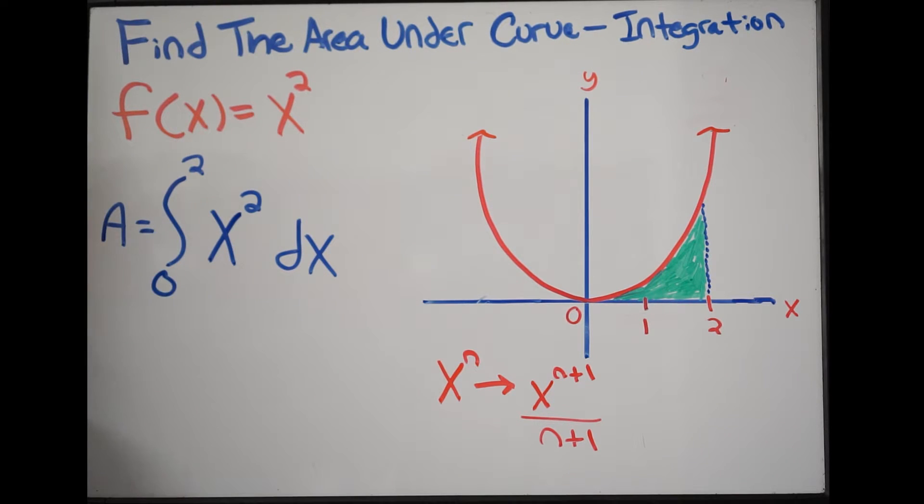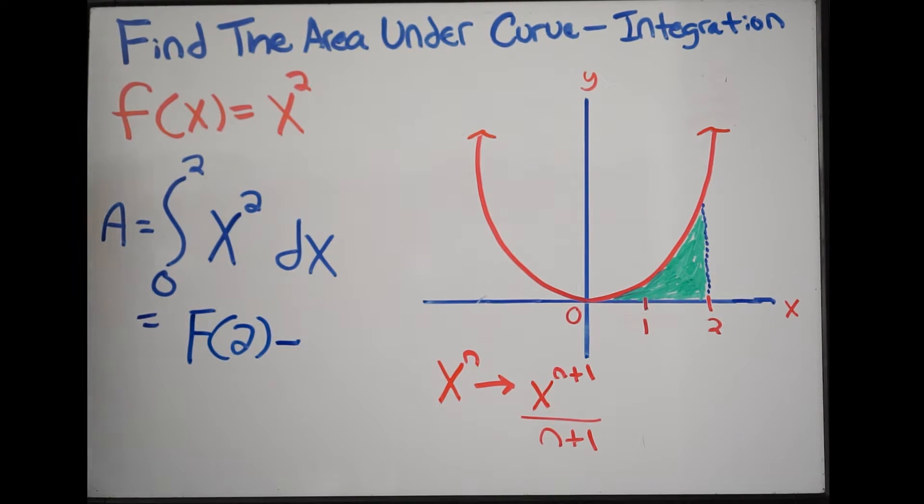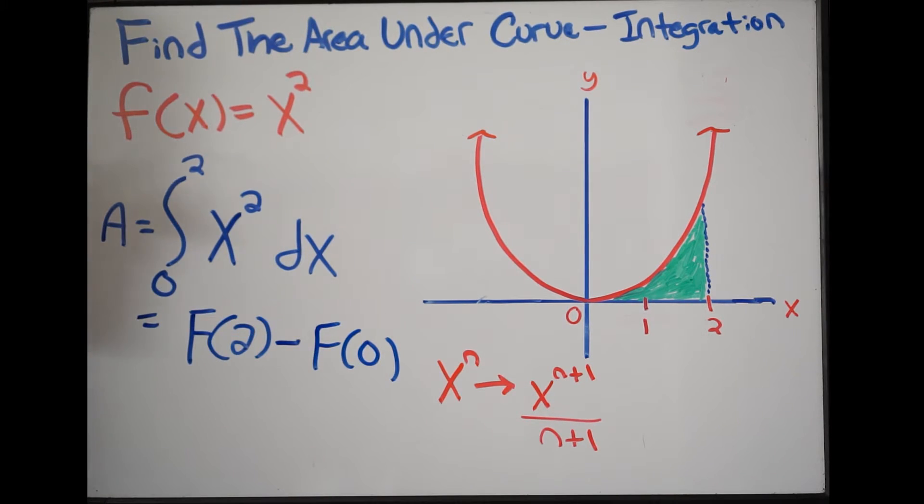So going back to this, this tells us we need to do the following. We need to take the antiderivative of f(x) at 2, so the antiderivative of f(x) at 2 minus the antiderivative of f(x) at 0. This is how we're going to find the area under the curve. So we need to take the antiderivative of x².